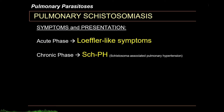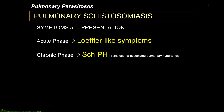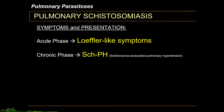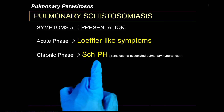Pulmonary schistosomiasis is an aberrant manifestation of schistosomiasis. The symptoms during the acute phase are consistent with Loeffler-like symptoms. However, during the chronic phase, when multiple worms and schistosoma ova get lodged in the lungs, it may manifest as schistosoma-associated pulmonary hypertension.